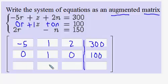Then lastly, the last row would be two. There's no z, so you can think of that as zero z, so put a zero here. Then you have a negative one as a coefficient on the n. And our constant is 150.